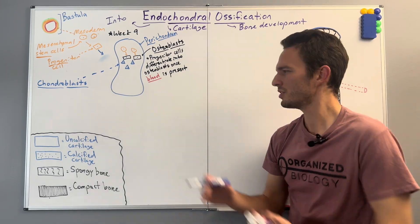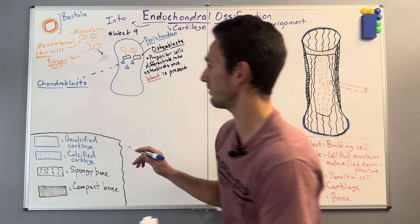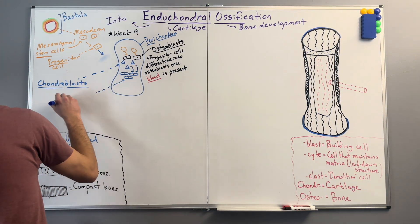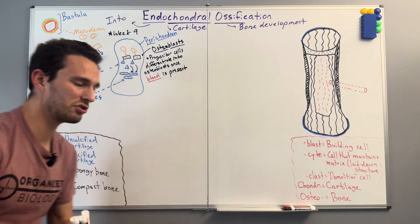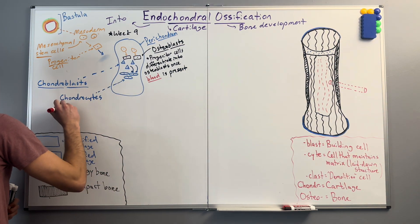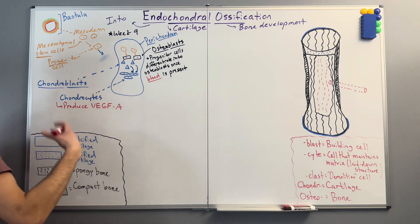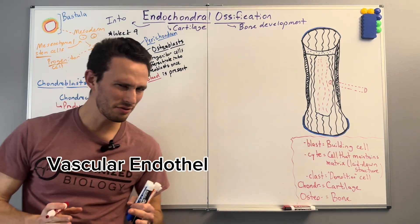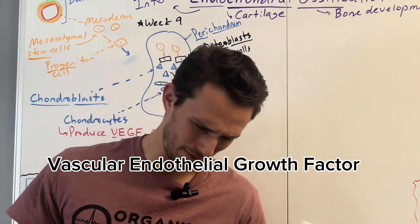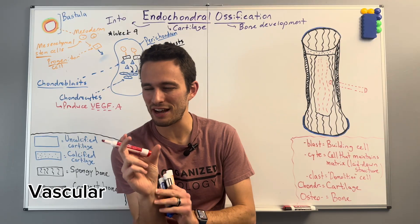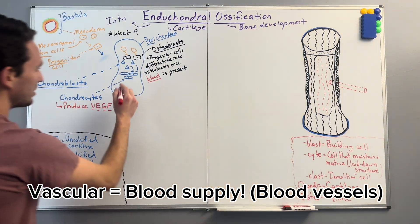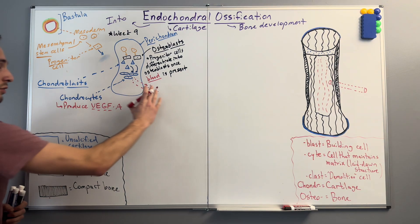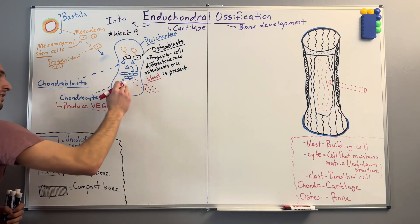The chondroblasts, which have now matured after their building extravaganza, have now turned into things called chondrocytes. And these chondrocytes are going to begin producing a very important factor called VEGF — specifically VEGF-A. VEGF stands for vascular endothelial growth factor. Just look at the word vascular — that means a blood supply. So as these cells begin producing these VEGF protein factors, they will start drawing a blood supply to this region.